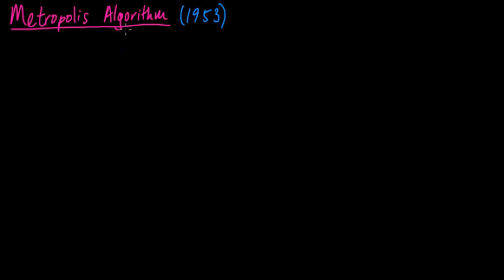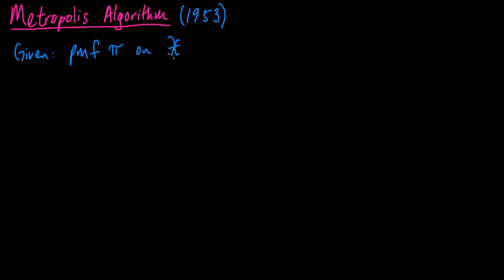That's what we call it: the Metropolis algorithm. The setup is that we're given some PMF — let's call it π — on a set of states X. We'll consider the case when X is countable, so X is a countable set. We're dealing with a discrete distribution, so it's clearly a PMF.